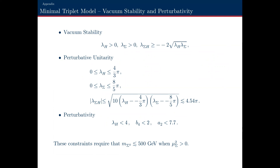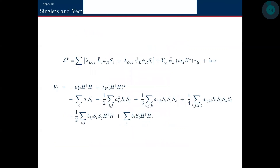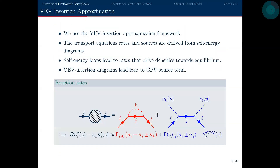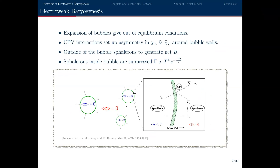[Questioner]: A pedagogical question — why do we need a first-order phase transition to explain the baryon asymmetry? Why not a second-order or just any phase transition? Also people often mention a strong first-order phase transition — could you explain? [Leon]: For a strong phase transition, the ratio of the Higgs VEV to the temperature must be larger than about one. The sphaleron rate is proportional to the exponential of the ratio of the electroweak symmetry breaking VEV to the temperature. If this ratio is small, sphalerions are still active inside the bubble.